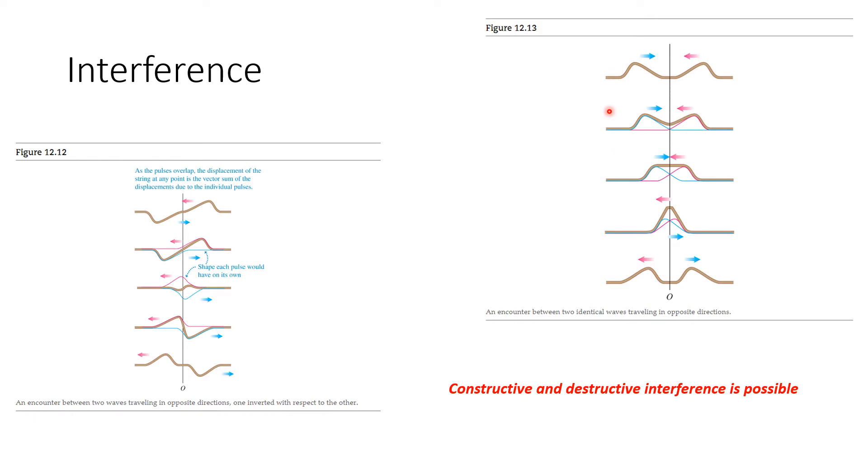There can also be constructive interference. Here you see two waves going and they come together. There's the blue one, there's the red one, but they add to one another. The peak actually grows. So you can have constructive and destructive interference of waves.